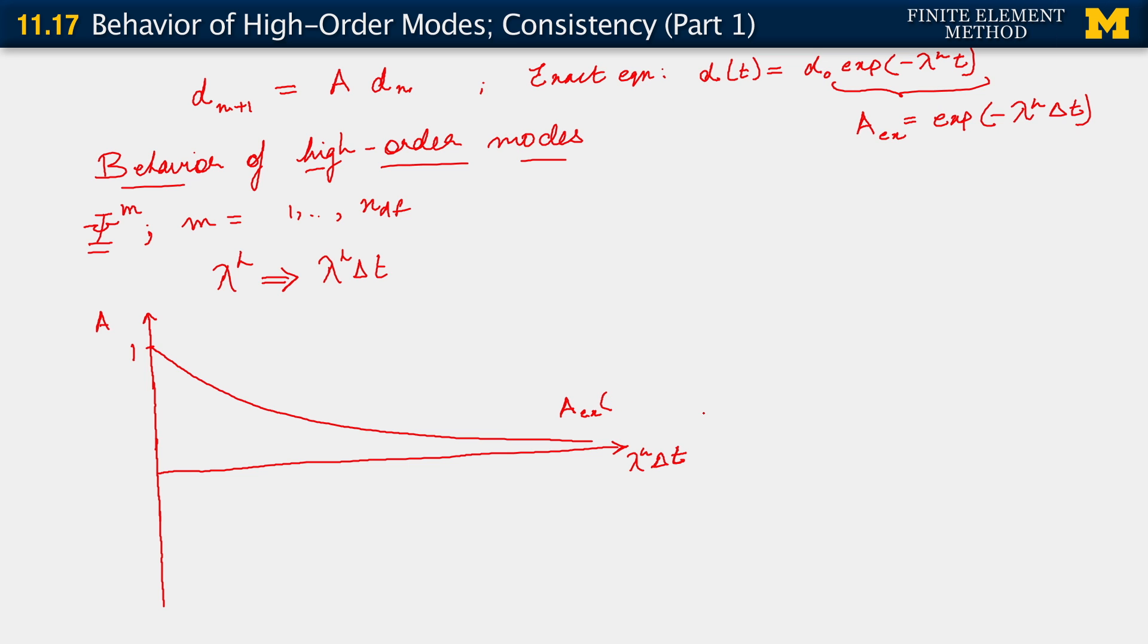So this is what I'm going to call A exact. And in parentheses here, I'm going to write out the limit that A exact tends to as lambda h delta t tends to infinity. Clearly, as lambda h delta t tends to infinity, A exact goes to 0.